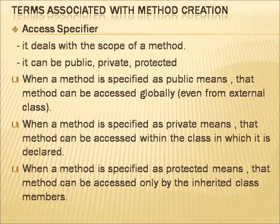Now we can see the terms associated with method creation. First is the access specifier. What is an access specifier? It deals with the scope of a method. It tells the accessibility of that particular method by other class members. When a method is specified as public, it means the method can be accessed globally — it can be accessed even from external classes. When a method is specified as private, it can only be accessible within the class where that particular method is created.